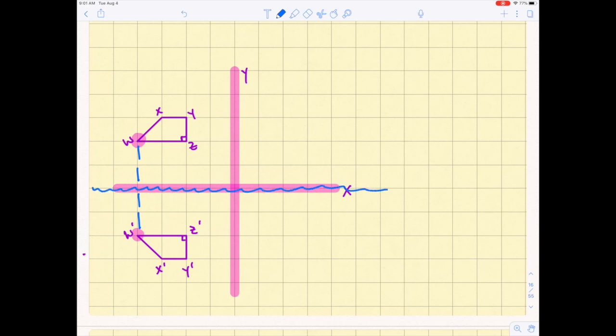You can see the line of reflection in this example is my x-axis, so you would simply write that this is a reflection across or over the x-axis. Right? Very simple.